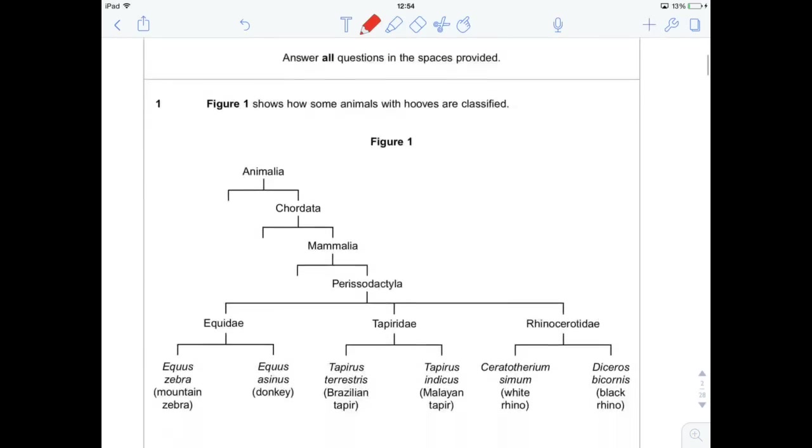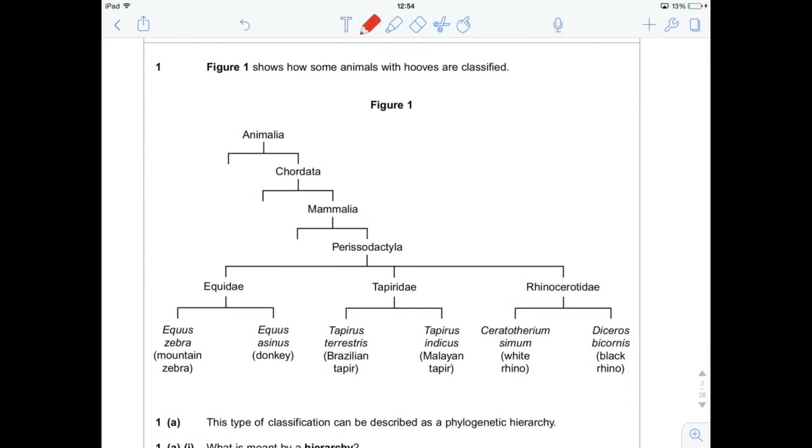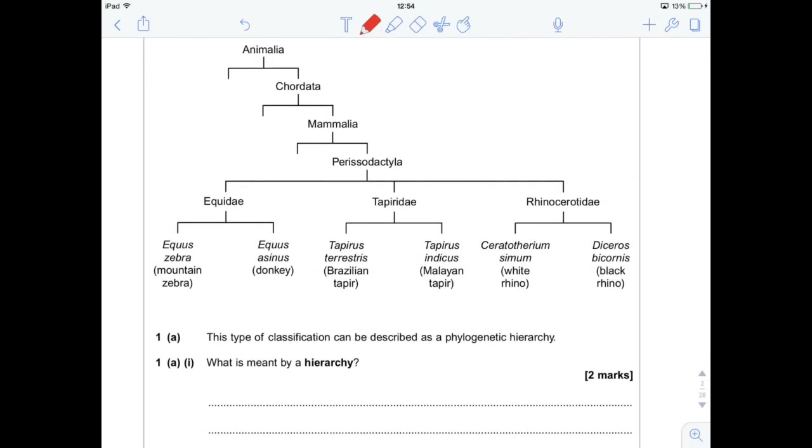So question 1 is a really nice classification question. You're confronted with a phylogenetic hierarchy, as it says in the question. And we've got a bunch of different organisms. We've got zebras, donkeys, tapirs and rhinos. So, first question,